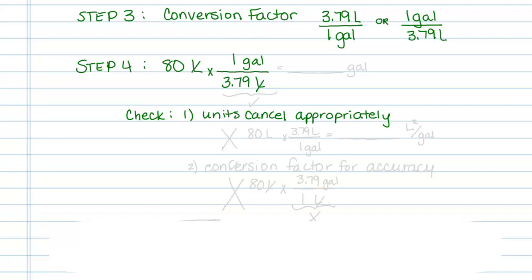So I know that the unit left is gallons. If I had written this in the reverse, 80 liters times 3.79 liters over one gallon, my liters don't cancel out, and the units I would have would be liters squared over gallon, and that's not correct. So I know that that would not be the correct setup and would give me an incorrect answer.